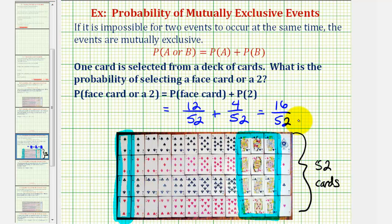So this is our probability, but it does simplify. The greatest common factor of sixteen and fifty-two is four. So if we divide both of these by four, we would have the simplified fraction form of our probability.